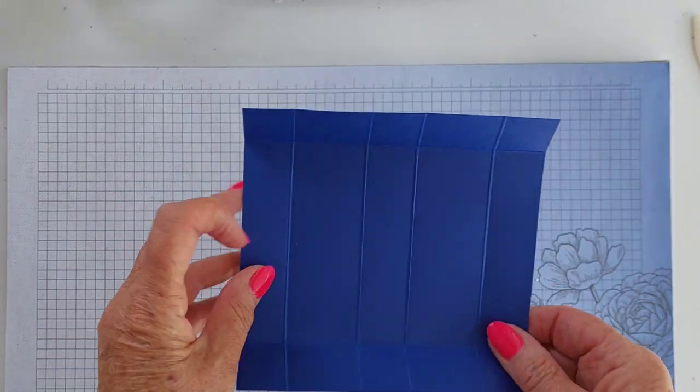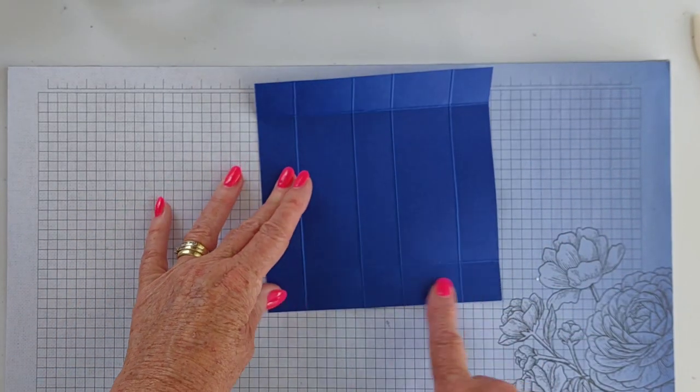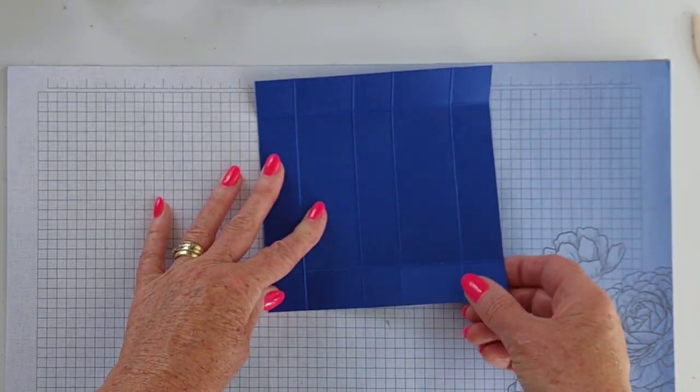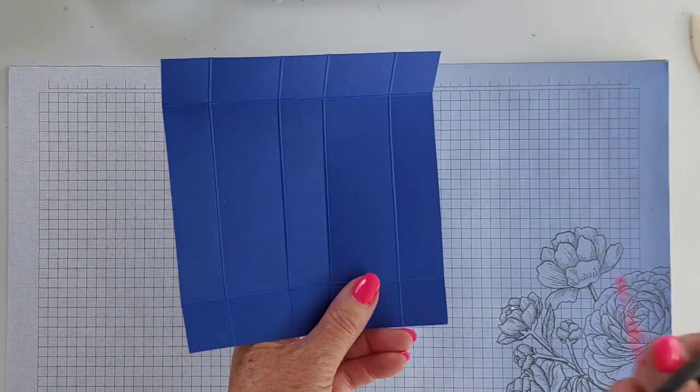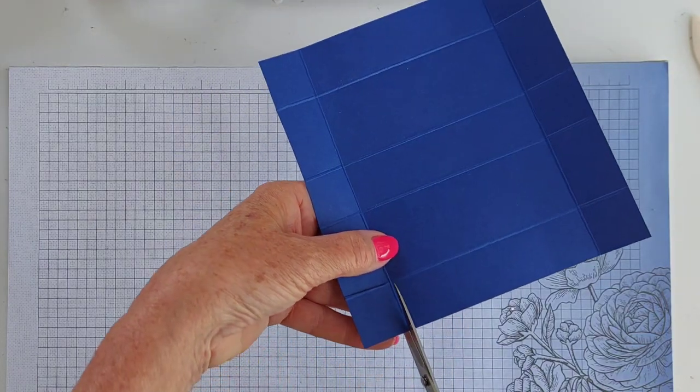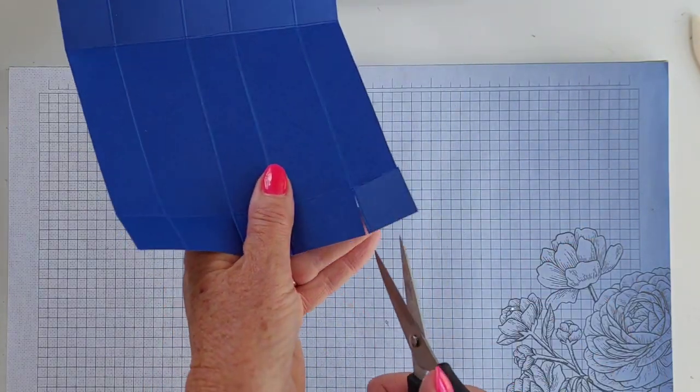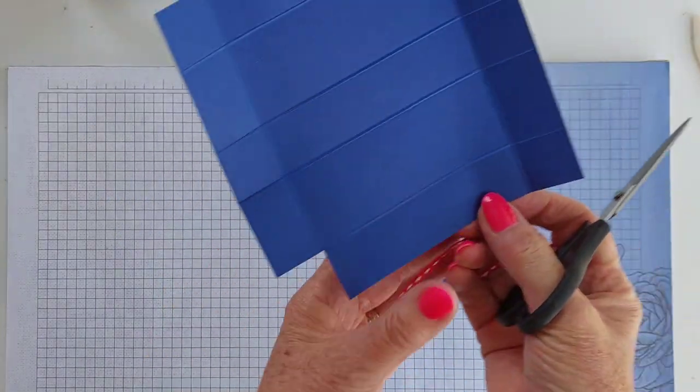Okay, so with the paper facing you with all of those smaller score lines down, the squares down the bottom and up the top, the first one you're going to do - it doesn't matter which end - just cut away that tab there from that end. Okay, and that one.